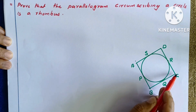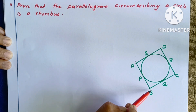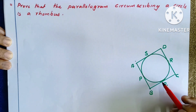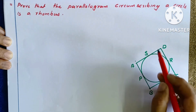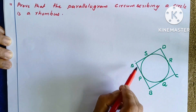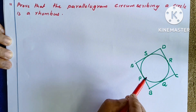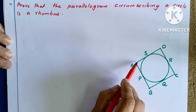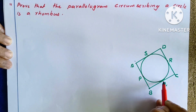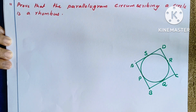Let ABCD be the parallelogram where sides AB, BC, CD, and AD touch the circle at points P, Q, R, and S respectively. We need to prove AB plus CD equals BC plus AD, and ultimately that all four sides are equal.